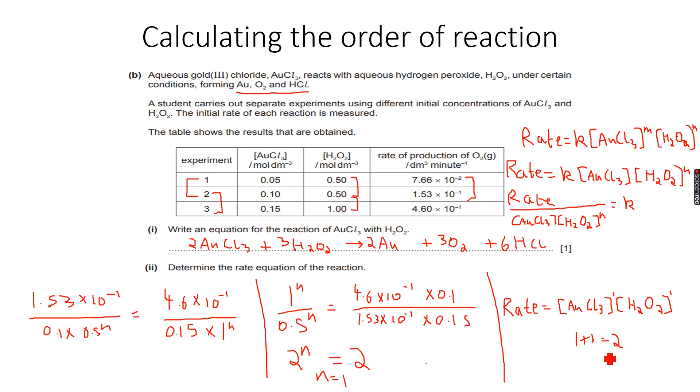Now if you can see, the coefficient of AuCl3 was 2, but it is raised to the power of 1, and the coefficient of H2O2 is 3, and even that is raised to the power of 1. So it really does not depend on the coefficient in the rate equation. It cannot go beyond the coefficient, but it does limit itself to 1 in this case. It can be any value - it can be 2 and 3 as well - but in this case it is not. It is not necessary that it will be the coefficient in the stoichiometric equation.